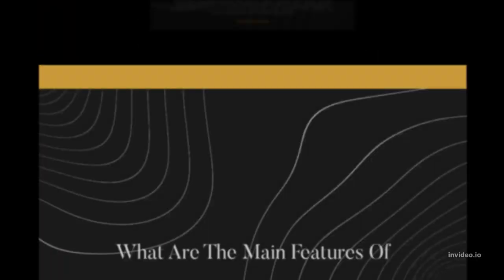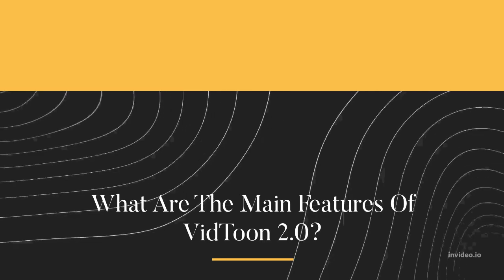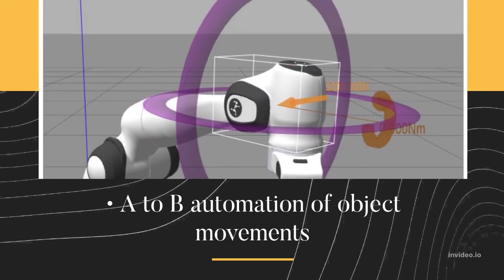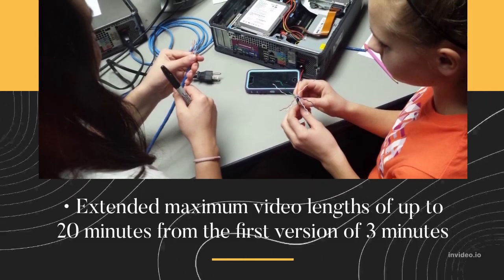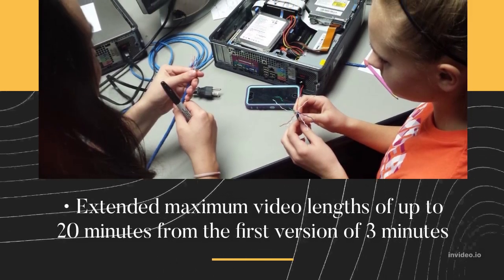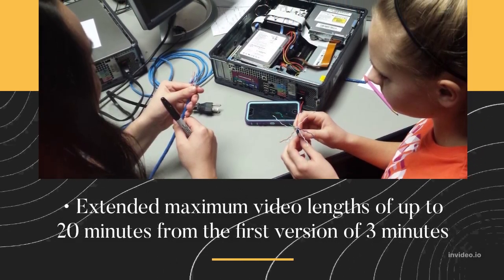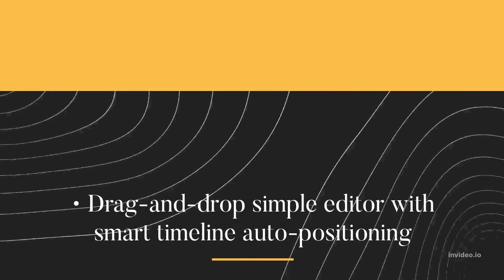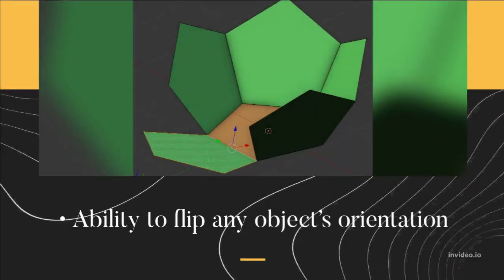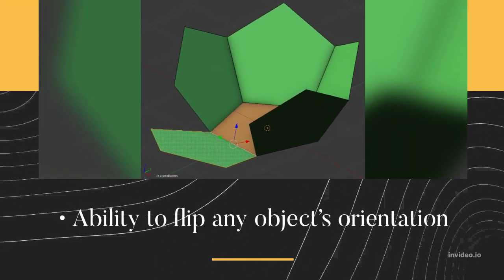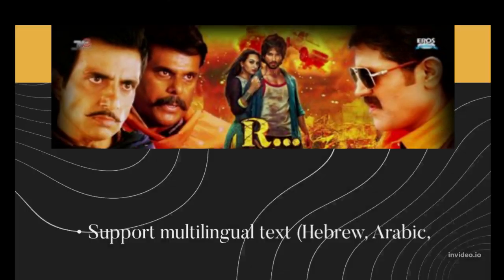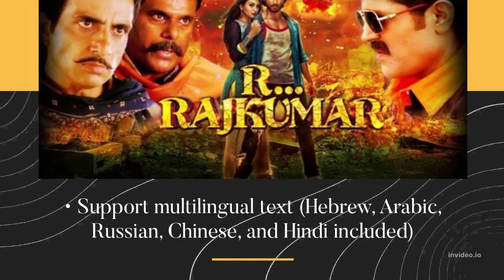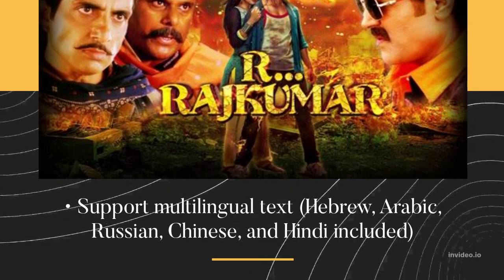What are the main features of VidToon 2.0? A-to-B automation of object movements, extended maximum video length of up to 20 minutes from the first version's 3 minutes, drag and drop simple editor with smart timeline, auto positioning, ability to flip any object's orientation, and support for multilingual text including Hebrew, Arabic, Russian, Chinese, and Hindi.